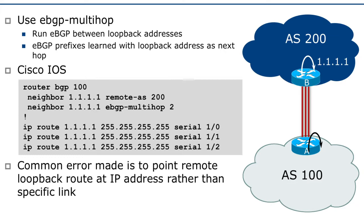The Cisco IOS configuration snippet shows that we need to change eBGP's default behavior to tell it that its external neighbor is not directly connected. That's done by the 'neighbor address eBGP multi-hop' command. The sub-command of eBGP multi-hop specifies how many time-to-live hops away the remote address is — we make it 2. eBGP multi-hop of 1 means directly connected; 2 means it's 2 hops away, because the loopbacks are not directly connected.